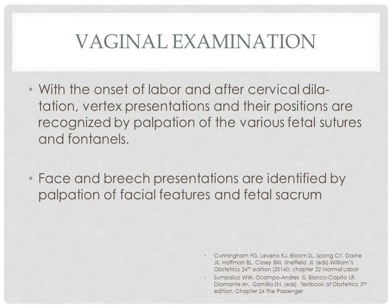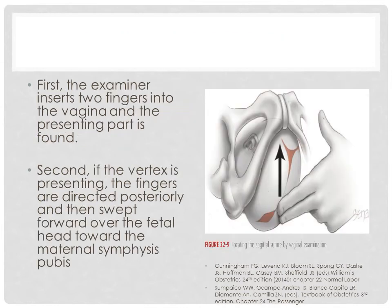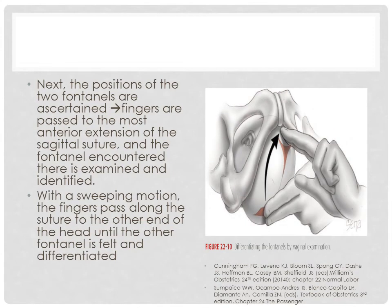With the onset of labor and after cervical dilatation, vertex presentations and their positions are recognized by palpation of the various fetal sutures and fontanels. Face and breech presentations are identified by palpation of facial features and the fetal sacrum. The examiner inserts two fingers into the vagina, finds the presenting part, and if the vertex is presenting, the fingers are directed posteriorly then swept forward over the fetal head towards the maternal symphysis pubis. The positions of the two fontanels are then ascertained by passing fingers along the sagittal suture to identify and differentiate each fontanel.